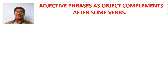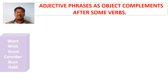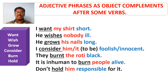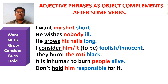Here are some more adjective phrases which can be used as object complements after certain verbs. These verbs include: want, wish, grow, consider, burn, hold. The verbs are underlined and objects are marked in red ink. The adjective phrases used as object complements are marked in blue ink. They include: short, ill, long, foolish, innocent, black, alive, and responsible.